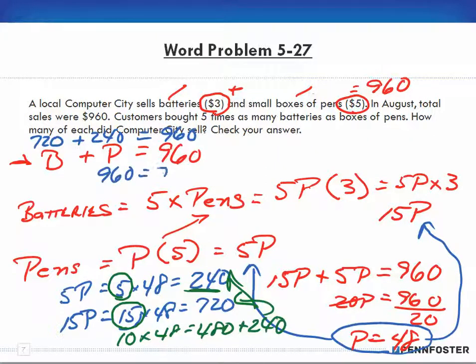Now I can plug those numbers in. For my batteries, I have 720, and for my pens, I have 240. When they add up, they equal 960. 960 equals 960, so I know that my P equals 48 is correct. Notice that these problems are pretty much basically the same. 5-27 is very similar to 5-15.